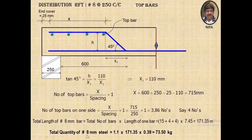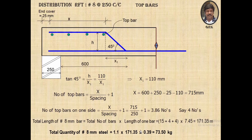The total quantity of 8 mm diameter steel is 1.1 × total length × weight per meter run. Using the formula 0.00616 × d², with d = 8 mm, the weight per meter run is 0.39 kg/m. The total quantity of 8 mm diameter steel required comes to 73.50 kg.